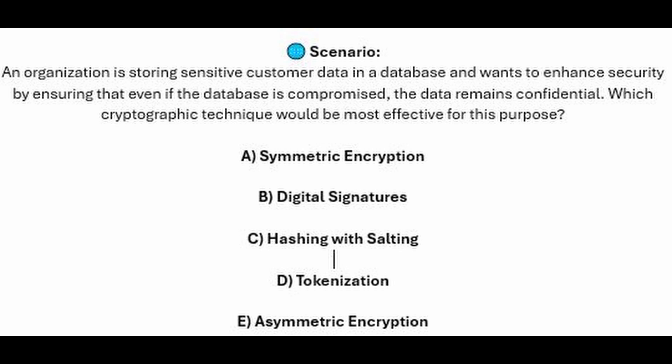Is it A, asymmetric encryption? Is it B, digital signatures? Is it C, hashing with salting? Is it D, tokenization? Or is it E, symmetric encryption?